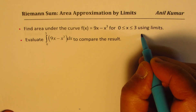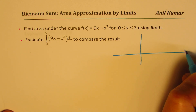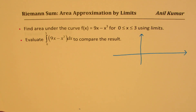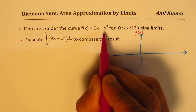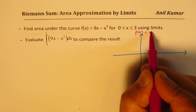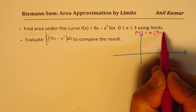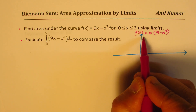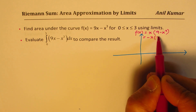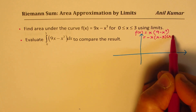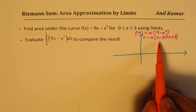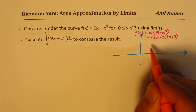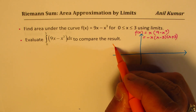The idea is to use both methods of finding area and see how close the results are. The function f(x) = 9x minus x³ can be factored as x times (9 minus x²), which can also be written as negative x times (x minus 3) times (x plus 3). This is a cubic function with a negative leading coefficient, so the graph goes downward — something like this.